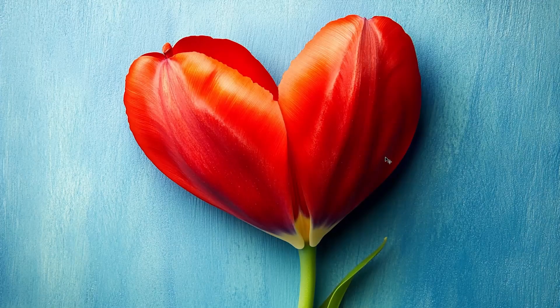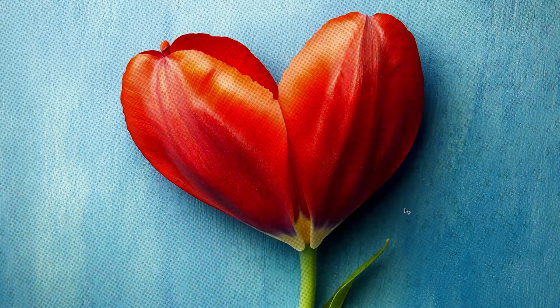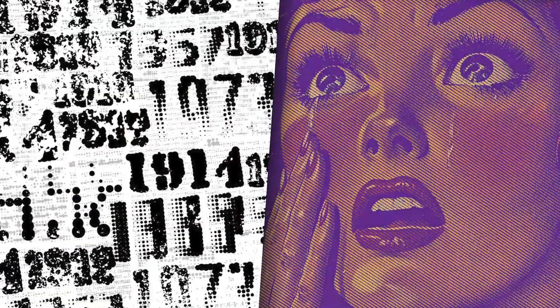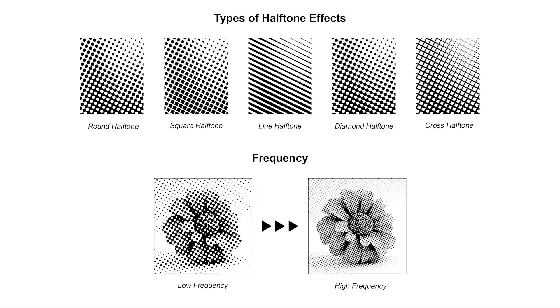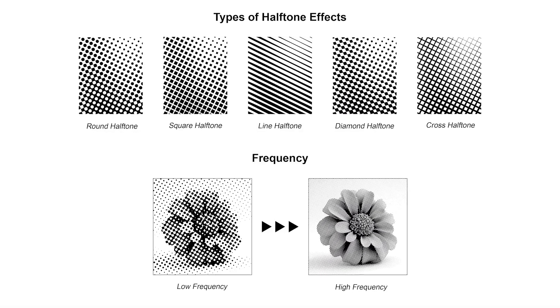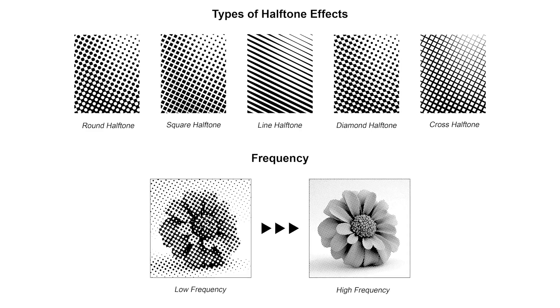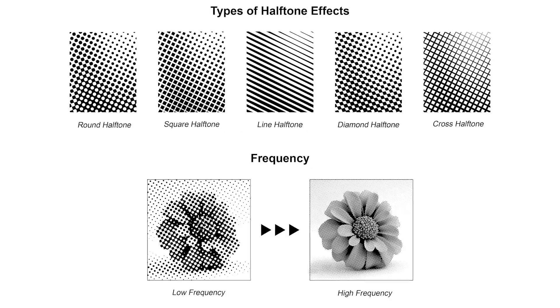A halftone is a design technique that uses tiny dots to create shading and gradients. It's a cool way to add depth without needing tons of colors. You've probably seen it in retro comic books and newspapers. By changing the size, spacing, and shape of the dots, you can make areas look darker or lighter, giving your designs a really cool textured look.